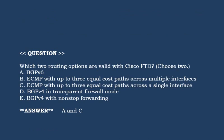Next question: Which two routing options are valid with Cisco FTD? Choose two options. Option A: BGP V6. Option B: ECMP with up to three equal cost paths across multiple interfaces. Option C: ECMP with up to three equal cost paths across a single interface. Option D: BGP V4 in transparent firewall mode. Option E: BGP V4 with non-stop forwarding. Correct answer is Option A and Option C.